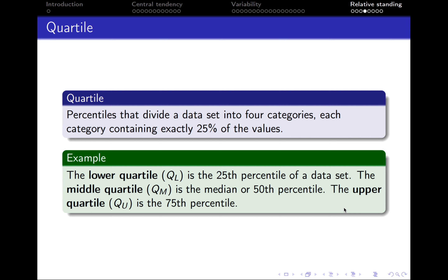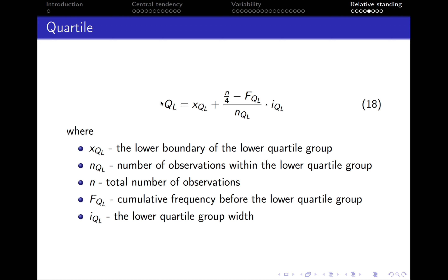Quartile is a special case of percentile — it divides a data set into four categories, each containing exactly 25 percent of the values. The lower quartile represents the first 25 percent of observations. The middle quartile is the median or 50th percentile — the value that splits the sample into two equal parts. The upper quartile is the value that splits the sample into 75 percent and 25 percent. To calculate the lower quartile: take the lower boundary of the lower quartile group, plus N divided by 4, minus fql (cumulative frequency before the lower quartile group), divided by nql (number of observations within the lower quartile group), multiplied by iql (the lower quartile group width).